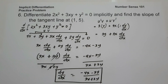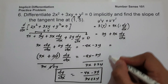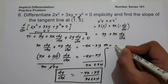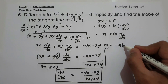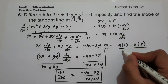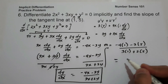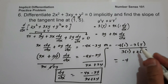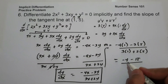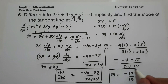Move 4x and 3y to the other side: 3x dy over dx plus 2y dy over dx equals negative 4x minus 3y. Factor: (3x plus 2y) times dy over dx equals negative 4x minus 3y. Divide both sides by (3x plus 2y). So dy over dx equals negative 4x minus 3y, all over 3x plus 2y. To find the slope at (1, 5), substitute x equals 1 and y equals 5: slope equals negative 4(1) minus 3(5), all over 3(1) plus 2(5), which gives negative 4 minus 15 over 3 plus 10. So the slope of the tangent line at (1, 5) is negative 19 over 13.